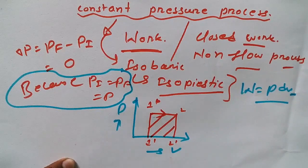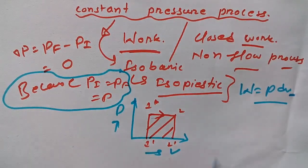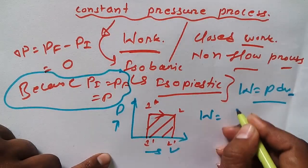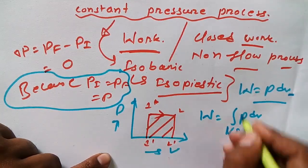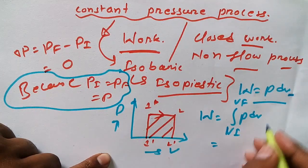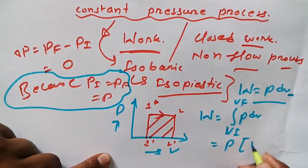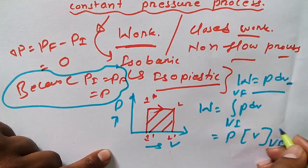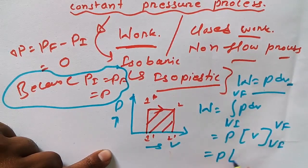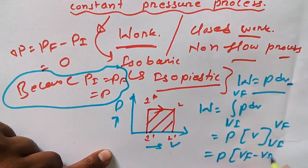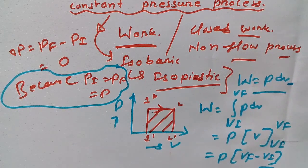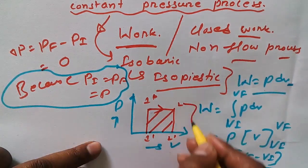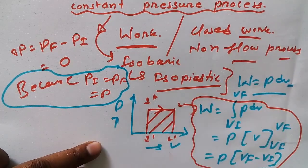Using the formula W equals ∫PdV from V_initial to V_final, and since pressure P is constant, this integral simplifies to W equals P times (V_final minus V_initial). This is a simple integration that we can easily understand using basic integration concepts.